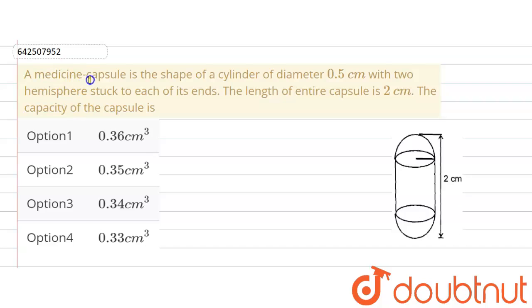The given question says that a medicine capsule is in the shape of a cylinder of diameter 0.5 cm. So the medical capsule or the medicine capsule is something like this. There is a cylinder and we are given the diameter of the cylinder.